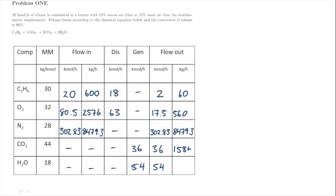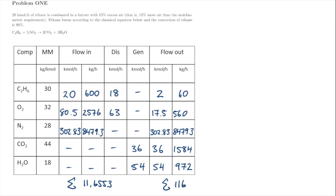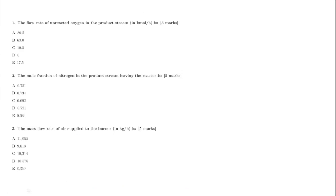We multiply through to calculate the mass flows out of the system — quite a large number for nitrogen. To check consistency in our mass balance table we sum the mass flow in and the mass flow out. We get 11,655.3 for both, which they should agree on because total mass is a conserved quantity. The flow rate of unreacted oxygen in the product stream is 17.5 kilomoles per hour, read directly from the table.